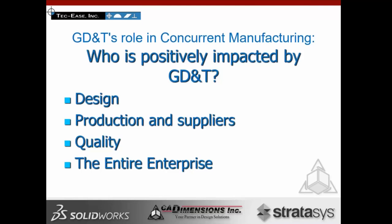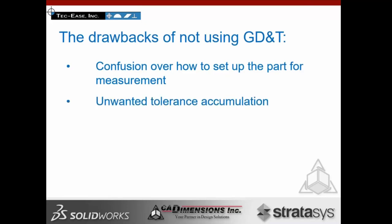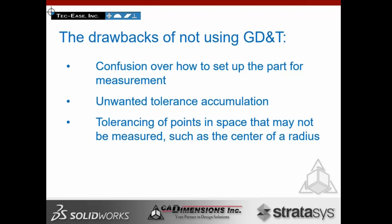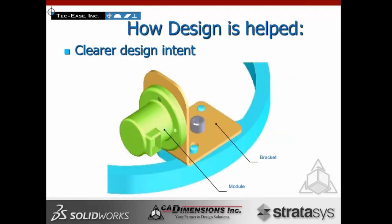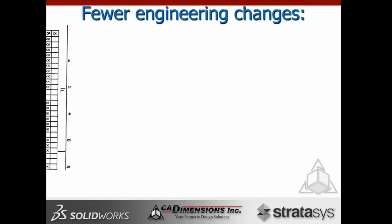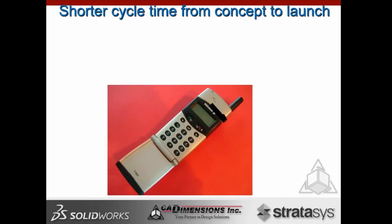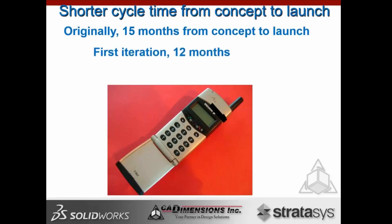GD&T's role in concurrent manufacturing — who is positively impacted? Design, production, suppliers, quality, and the entire enterprise. The drawbacks of not using GD&T include confusion over how to set the part up for inspection, tolerance accumulation, tolerancing points in space, and more. How does GD&T help design? We get clear design intent — relating features to the assembly or how features actually go together. There will be fewer engineering changes, meaning cost-effective parts and a shorter cycle time from concept to launch. Remember, the first company to get a product on the market makes the most money.